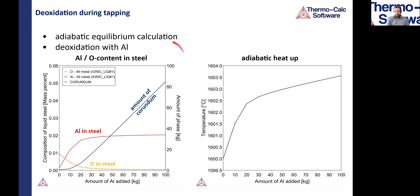We can see how the aluminum content in the steel evolves and how much oxide — corundum, in this case aluminum oxide — is actually formed. Since this is an adiabatic calculation, we can also observe the influence of the heat generated by this exothermic reaction. There is a temperature increase on this large steel bath, which is still rather small, because the initial oxygen content in the steel is already relatively low according to the literature data.